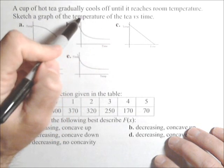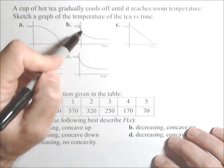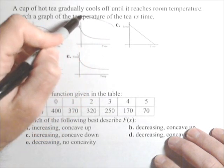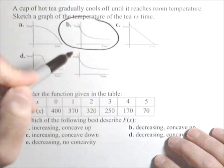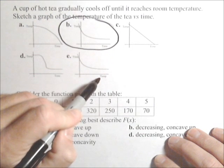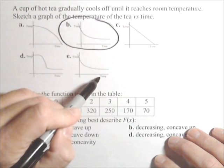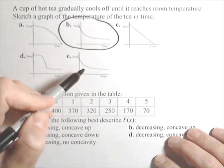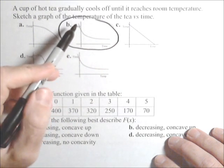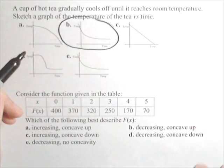So B is the one where it cools off quickly at first, and then a little slower over time. Now I know it looks like E, but notice that the axes labels have been reversed, so that changes around what the graph should look like. So B is gonna be our correct answer there.